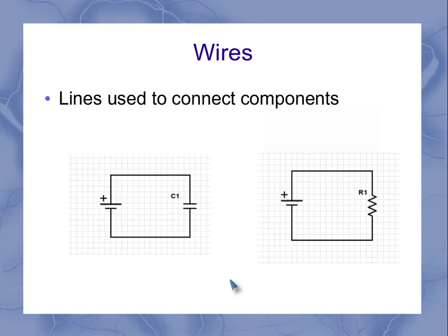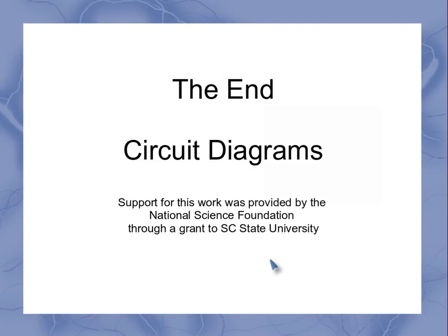Now wires are just shown as lines. A line that connects different components is going to be sort of an ideal wire that we have going between those two places. So that's our basics for circuit diagrams, so you know how to read and draw these things.